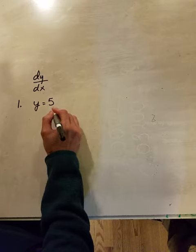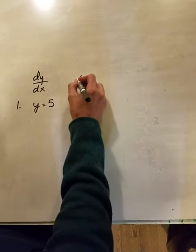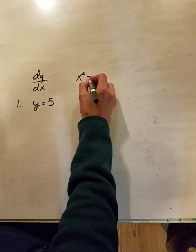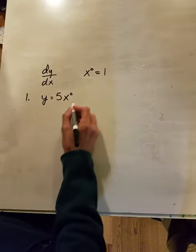To do power rule, we need the exponent of x, and we know that x to the 0 is equal to 1. So if we have 5x to the 0, that's the same thing as 5.